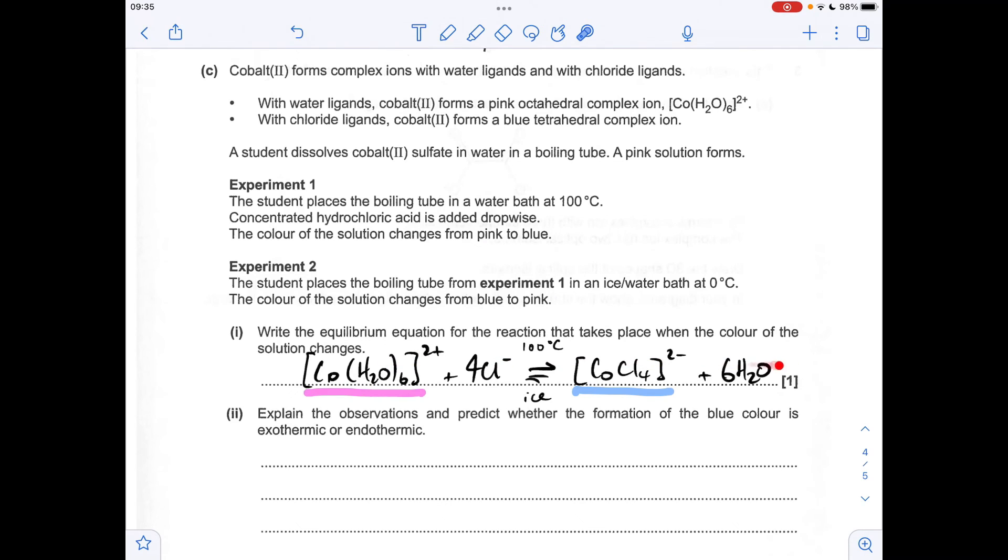So we've got to explain whether the production of the blue colour, so in other words, the forward reaction, is it exothermic or endothermic? So if we look at the temperature that's favoured that reaction, it's the high temperature. And remember from Le Chatelier's principle, high temperatures always favour the endothermic reaction. So this forward reaction must be endothermic.